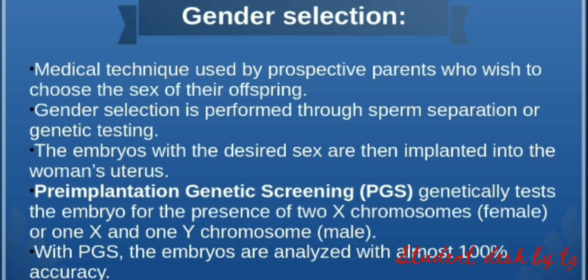This screening is called pre-implantation genetic screening, or PGS. We genetically test the embryo to check whether two X chromosomes are present (female) or one X and one Y are present (male). PGS is 100% accurate — if it is female, a female embryo will go ahead; if it is male, a male embryo will go ahead. There is no defect in this process.